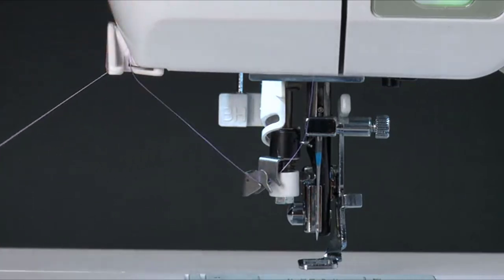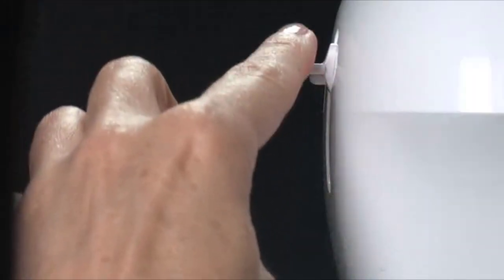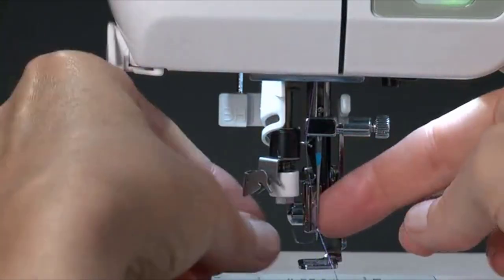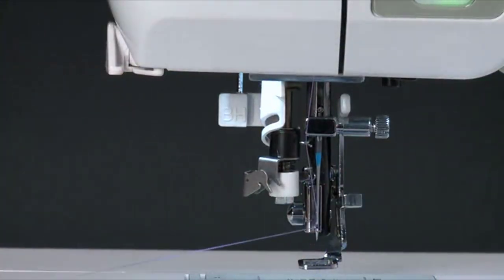Pull the thread tail to trim the excess thread. Now press down on the threading lever located here at the side of the machine. Release the lever and your needle will be threaded automatically.